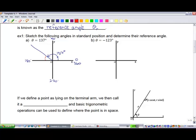What I need to find is this angle, the smaller angle between the terminal arm and the x-axis. I'm dealing with 180 degrees and 137 degrees. The amount between them, the big number minus the small number, gives us a reference angle of 43 degrees.